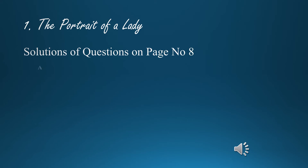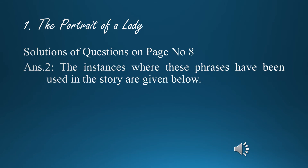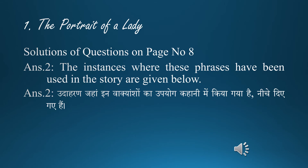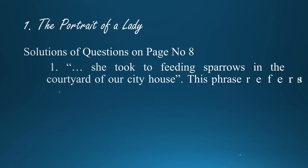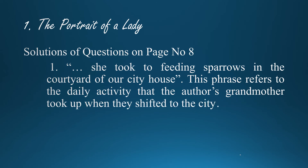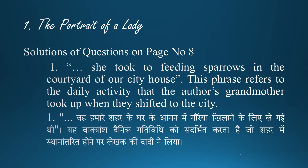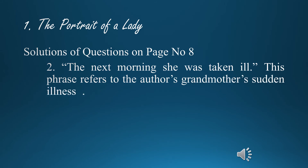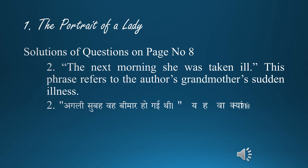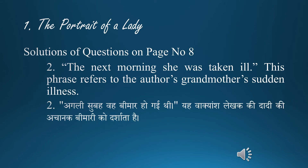Solutions of questions on page number 8, Answer 2: The instances where these phrases have been used in the story are given below. — Udaharan jahan in waakyanshon ka upyog kahani mein kiya gaya hai, neeche diye gaye hain. 1. She took to feeding sparrows in the courtyard of the city house — this refers to the daily activity the grandmother took up when they shifted to the city. 2. The next morning she was taken ill — this phrase refers to the author's grandmother's sudden illness. — Agli subah vah beemar ho gayi thi; yeh waakyansh daadi ki achanak beemari ko darshata hai.